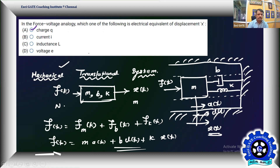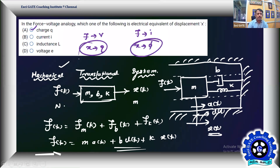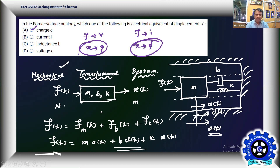The conclusion: force treated as voltage means displacement is treated as charge; force treated as current means displacement is treated as flux. Problems may involve mass, spring, and damper analogous to resistor, inductor, and capacitor. Remember the mass-spring-damper second-order force balance equation and the series or parallel RLC circuit to handle force voltage or force current analogy respectively.